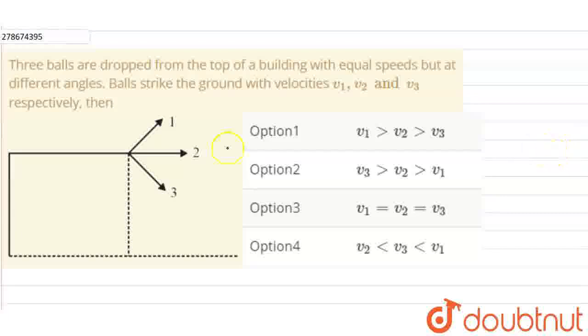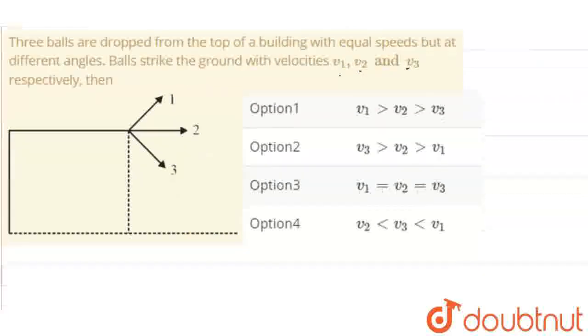Let's look at the question. In the question, 3 balls are dropped from the top of the building with equal speeds but strike the ground with velocities v1, v2 and v3. So we need to find the relations between v1, v2 and v3.